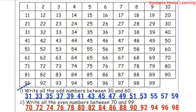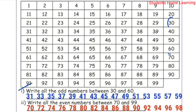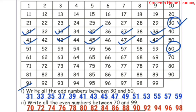Write all the odd numbers between 30 and 60. 30 is an even number, so we start from 31. The odd numbers are: 31, 33, 35, 37, 39, 41, 43, 45, 47, 49, 51, 53, 55, 57, 59. These are all the odd numbers between 30 and 60.